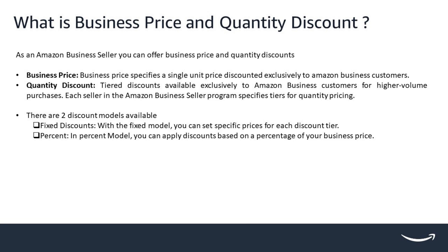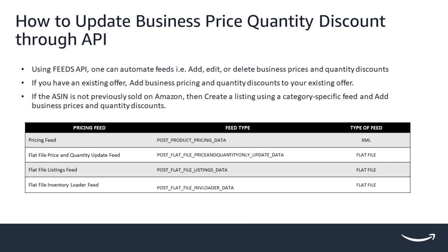There are two discount models available: fixed and percent. With the fixed model, you can set specific prices for each discount tier. You can specify up to five tiers using the quantity lower bound attribute, and each lower bound has an associated price such as quantity price 1, at which the discount becomes active. With the percent model, you can apply discounts based on a percentage of your business price, using a number between 0 and 99 for the discount you want to offer.